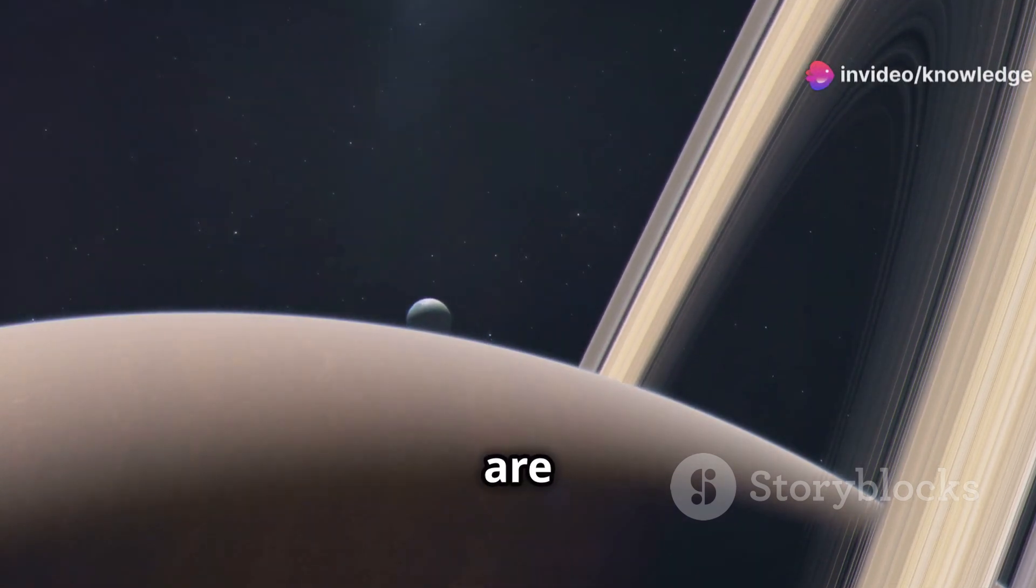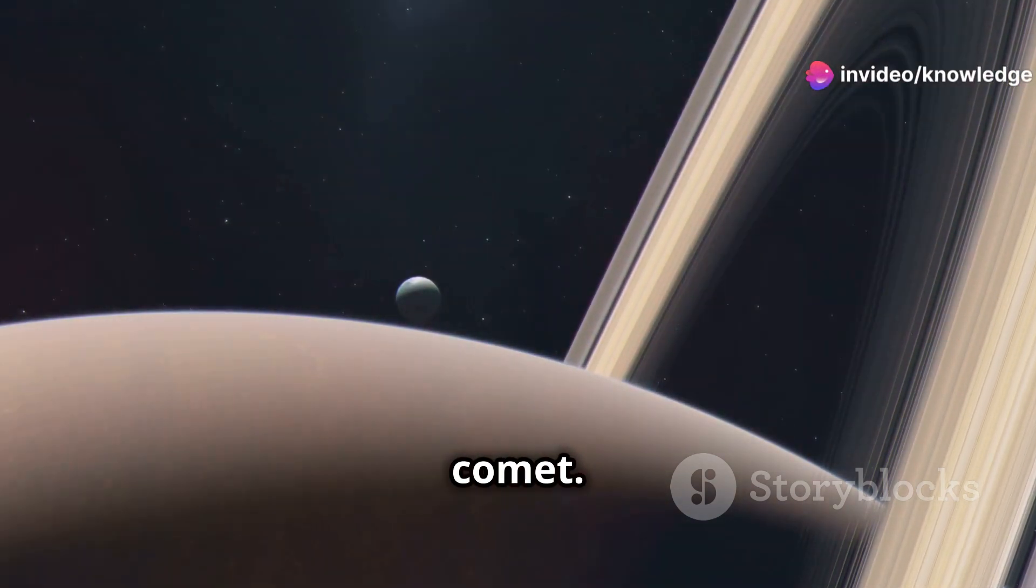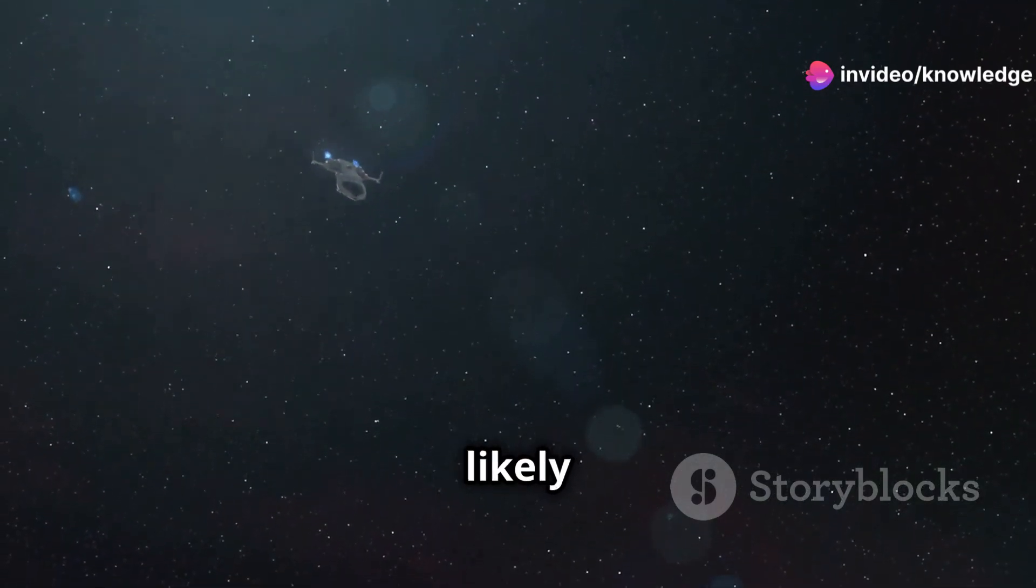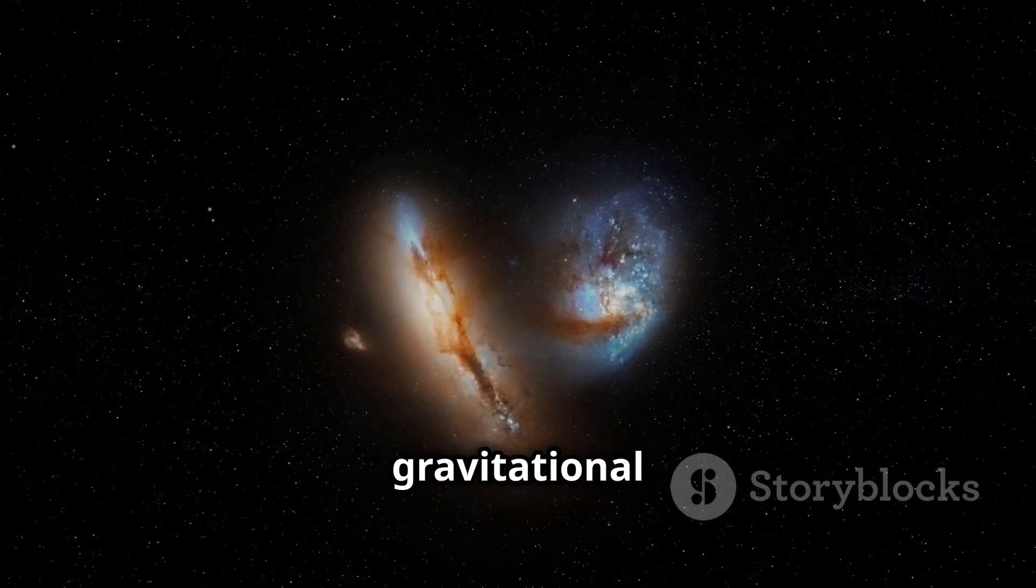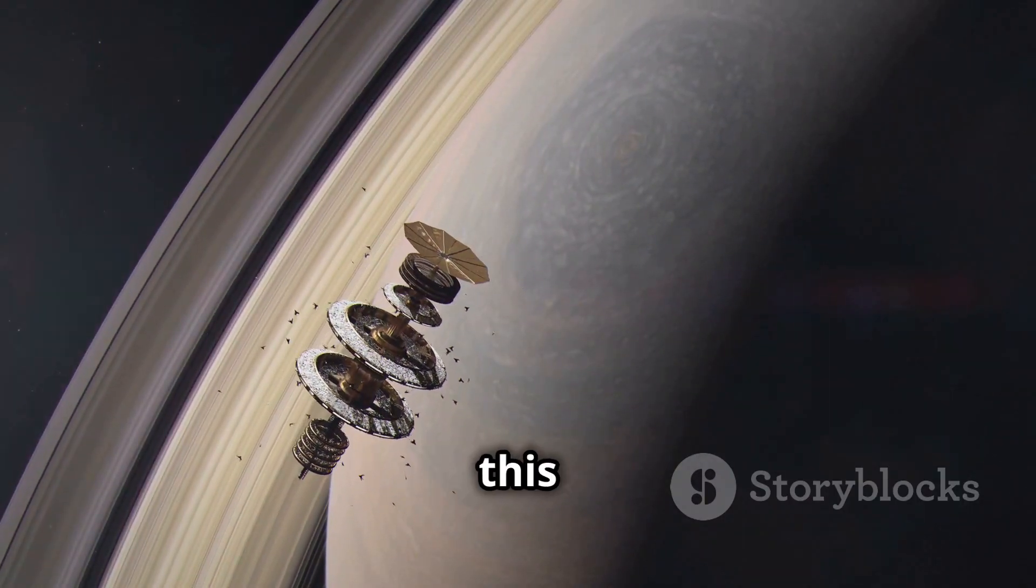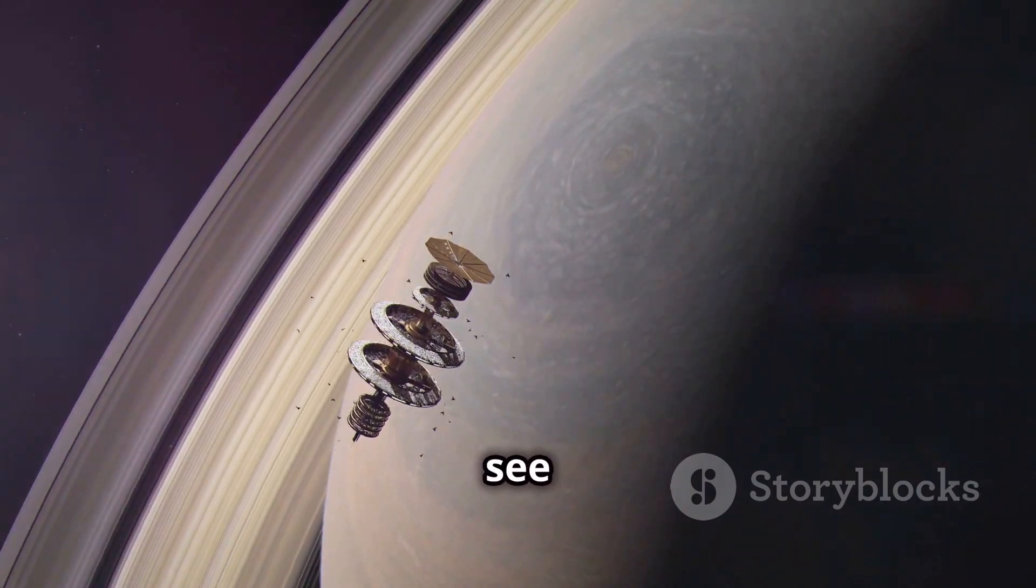The leading theory is that the rings are remnants of a shattered moon or comet. This celestial body likely ventured too close to Saturn and was torn apart by the planet's immense gravitational forces. The fragments from this event then spread out into the rings we see today.